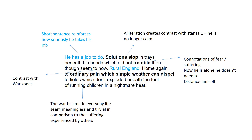The short sentence 'Rural England, home again' really contrasts with the war zones at the end of stanza one. In rural England it seems like quite a nice place to be, whereas Beirut and the other places described offer a massive contrast. 'Ordinary pain which simple weather can dispel' is an interesting word choice — the wars make everyday life seem meaningless and trivial in comparison to the suffering experienced by others. It's almost an oxymoron, but it shows just how difficult life was for those caught in these war zones.